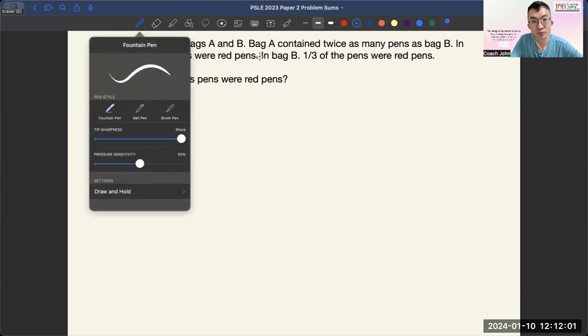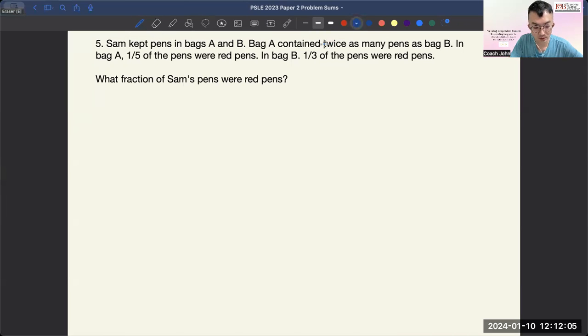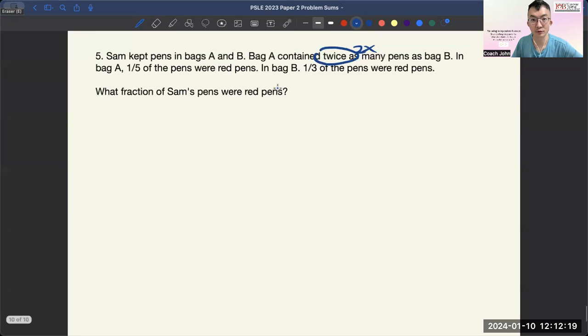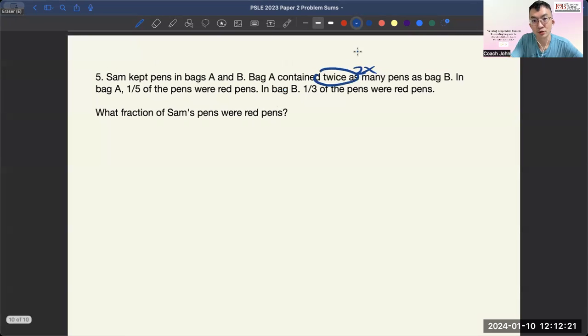So LB children, we are going to do what we always do, circle numbers, underline keywords. So let's circle twice, and then just write here 2 times. And if you want to make it clearer for you as well, you can just write 2 over 1, and then the 2 links to bag A, and then 1 links to bag B.